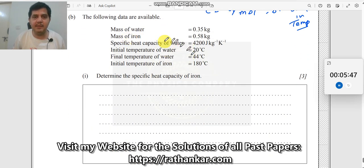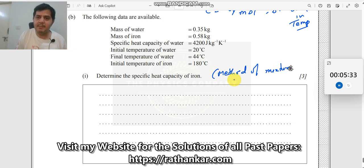Next one. The following data are available: mass of water, mass of iron, everything is given. Determine the specific heat capacity of iron. So how do you solve this problem? This problem is solved using method of mixtures. What do you mean by that? It tells you a very simple principle, which is nothing but conservation of energy, which tells you that the energy is neither lost nor energy is gained.